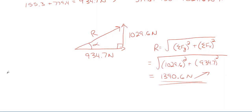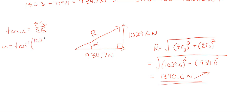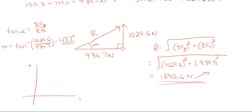Now to find the angle: using tangent, the angle off of the x-axis is arctan(ΣFy / ΣFx). Plugging in our values: arctan(1029.6 / 934.7) gives an angle of 47.7 degrees off of the x-axis. So if you draw it out, the 600 and 900 newtons combine to form a resultant of 1390.6 newtons at 47.7 degrees off of the x-axis.